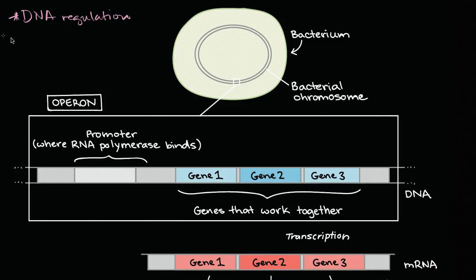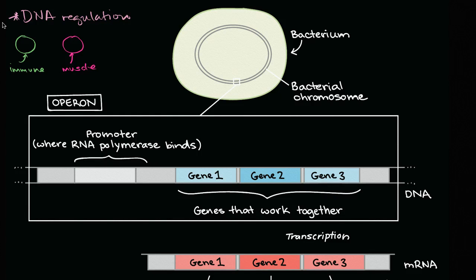For example, if you look at a multicellular organism - and these are oversimplifications - maybe this is some type of immune cell, and this over here is a muscle cell. They're going to have the exact same DNA. These are eukaryotes, so I'll draw the nuclear membrane there. Same DNA, but they have very different roles inside of this organism.